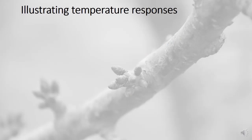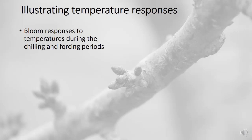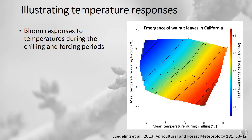Now that we've identified these chilling and forcing periods, we can look at how phenology responds to temperature during each phase. Here we're looking at the leaf emergence of walnuts in California. The response of the leaf emergence state is shown by a color gradient — blue meaning very early leafing and red meaning very late leafing — plotted against mean temperature during the chilling period identified by PLS regression and temperature during the forcing period.